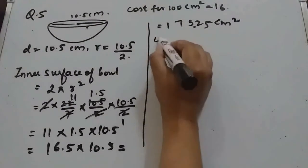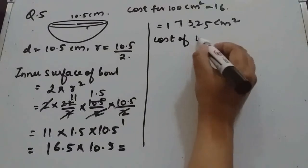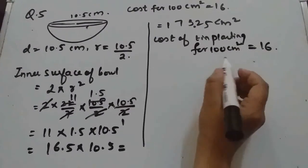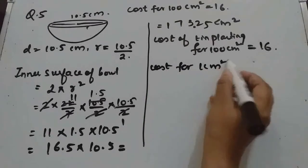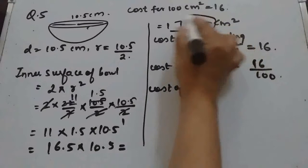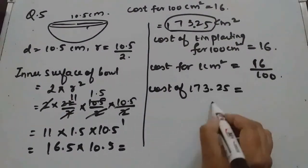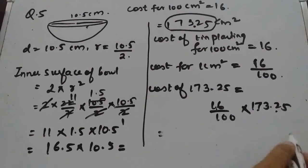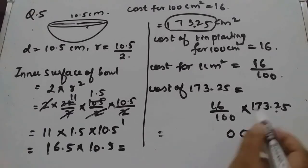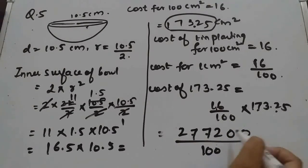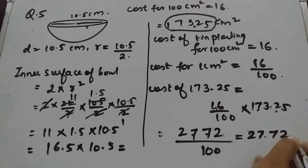Now for the cost: for 100 cm² the cost is 16 rupees, so cost per 1 cm² is 16/100. Cost for 173.25 cm² = (16/100) × 173.25 = 2772/100 = 27.72 rupees.